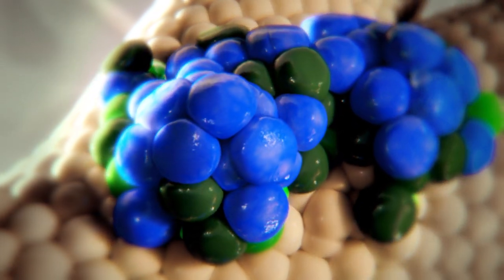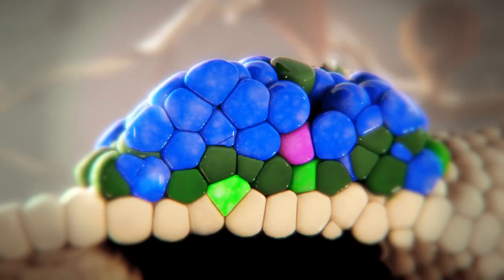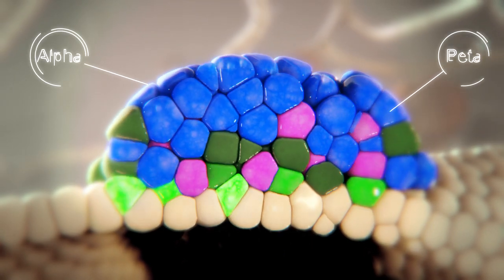The first cells to exit the cords turn on glucagon and become alpha cells. Because they were the first cells to bud out, these alpha cells appear at the periphery.